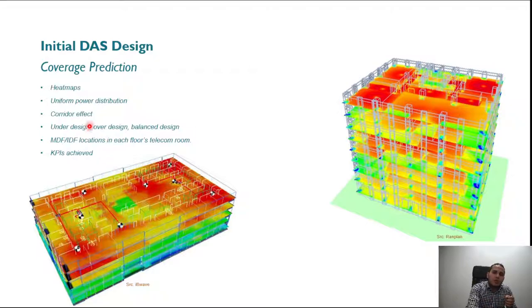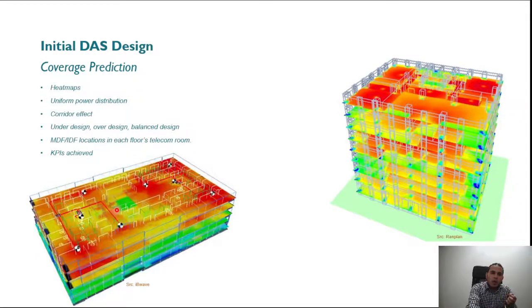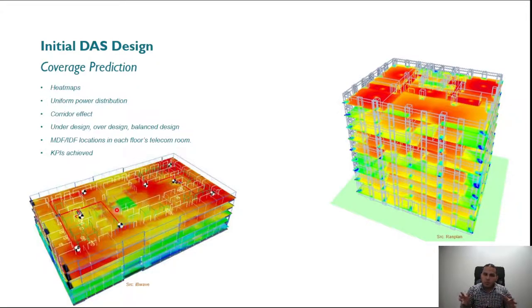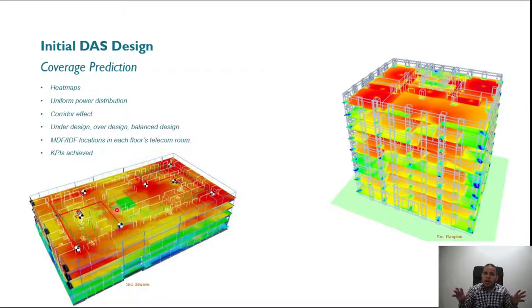During this phase, also make sure to utilize the corridor effect. For example, shifting an antenna toward a corridor allows you to benefit from the corridor effect and extend coverage. Make sure your design is neither under-designed nor over-designed — it should be a balanced design with uniform distribution, using the minimal number of components, minimal coaxial cables, and the minimal RF power needed to meet your KPIs.